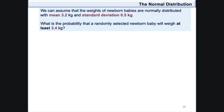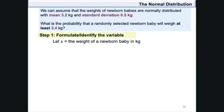Let us take a look at an example. We can assume that the weights of newborn babies are normally distributed with mean 3.2 kg and standard deviation 0.5 kg. What is the probability that a randomly selected newborn baby will weigh at least 3.4 kg? The first step is to formulate or identify the variable. In this case, let x be the weight of a newborn baby in kg.